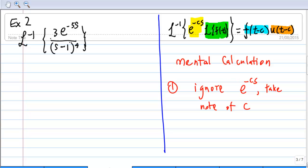So that means I must ignore e power negative 5s and take note that c is equal to 5. That means I'm eventually left with inverse Laplace transform of 3 over s minus 1 power 4, and we know that c is equal to 5.